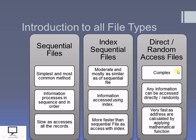Random access files are complex because we need to calculate the address locations of every record. Regarding how records are accessed: in a sequential access file, all records are accessed in sequence from first to last. In an index sequential file, records are accessed with the help of an index — sequentially, but index-driven. In a direct or random access file, any record can be accessed directly or randomly.